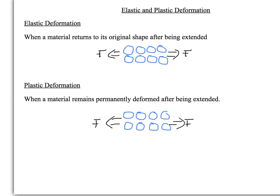The next thing you need to talk about is elastic and plastic deformation. An elastic deformation is when a material returns to its original shape after being extended. So you have a force on here, and what actually ends up happening is the actual structure itself doesn't change too much. What ends up happening is that under a force, you get the particles that make up the material, they get more spaced out.